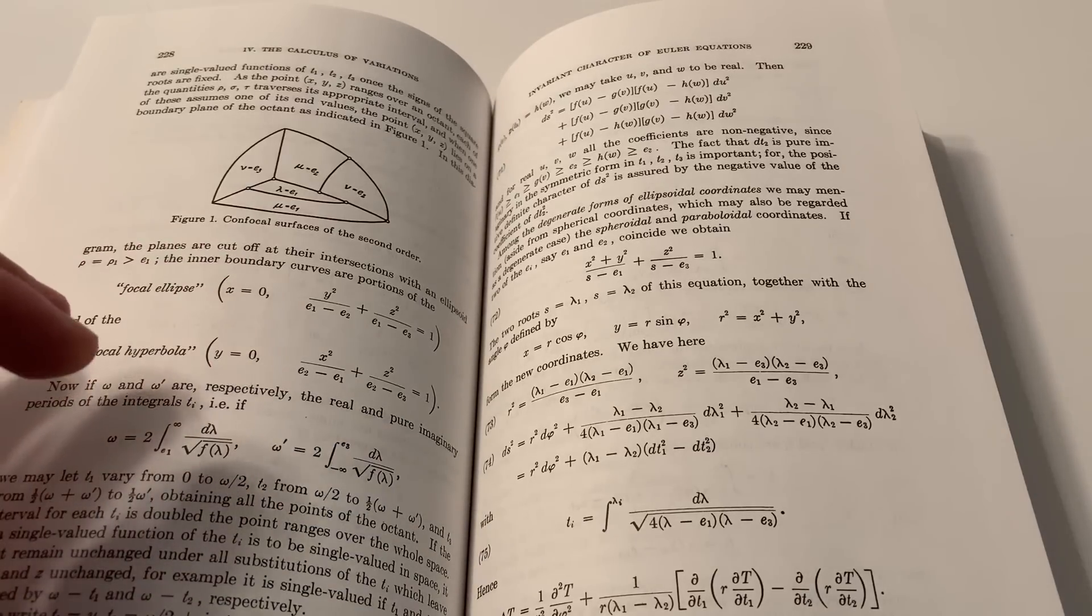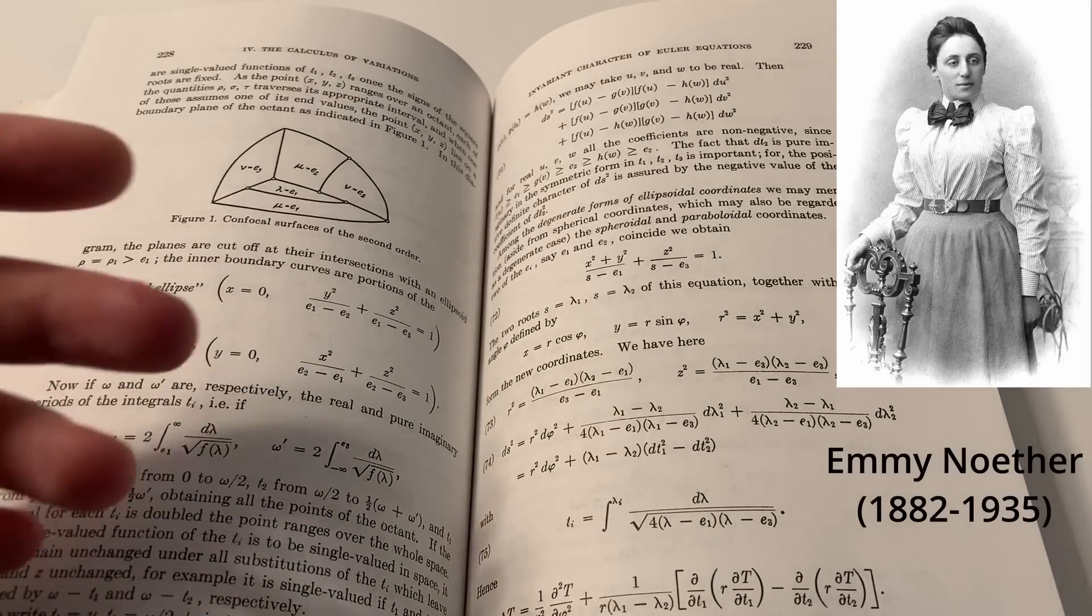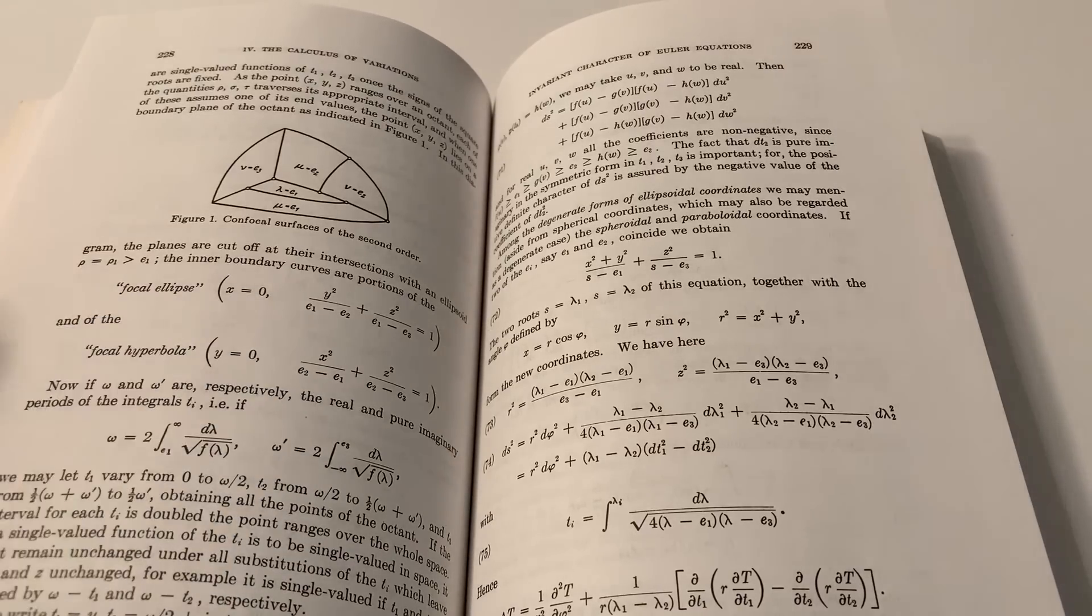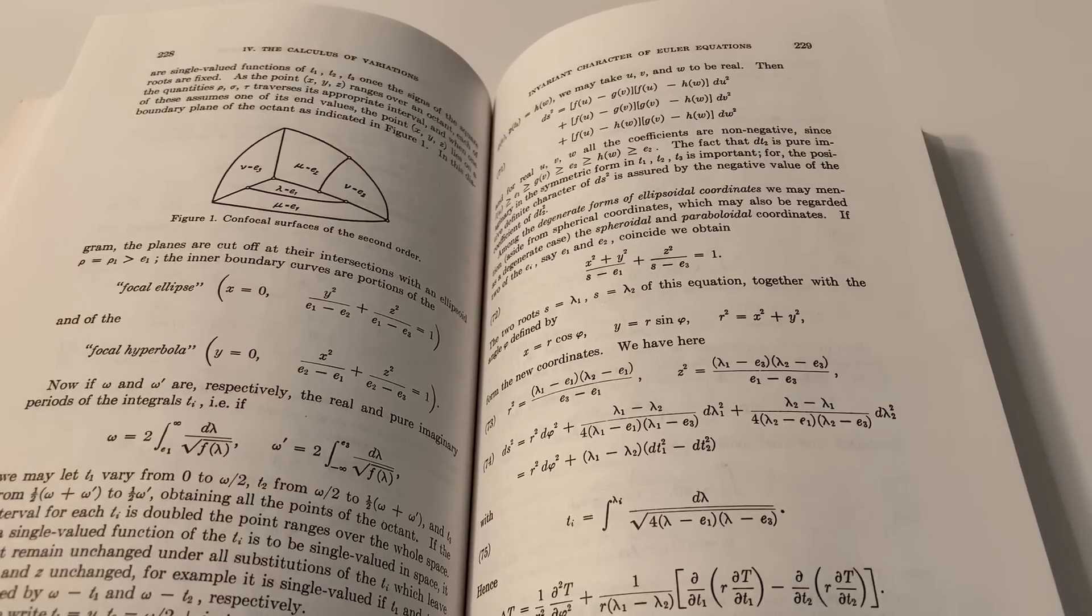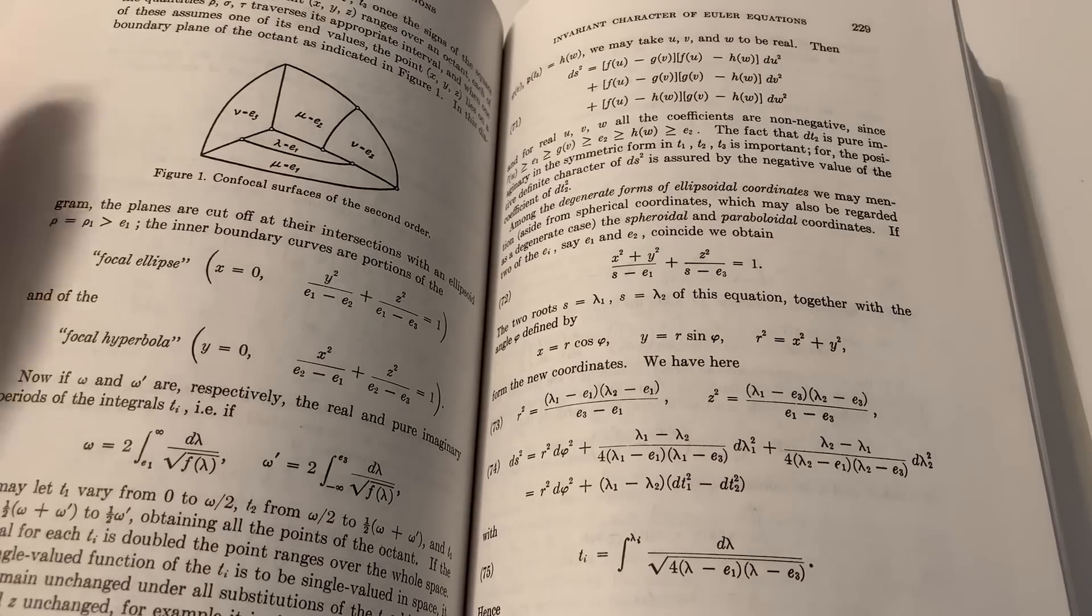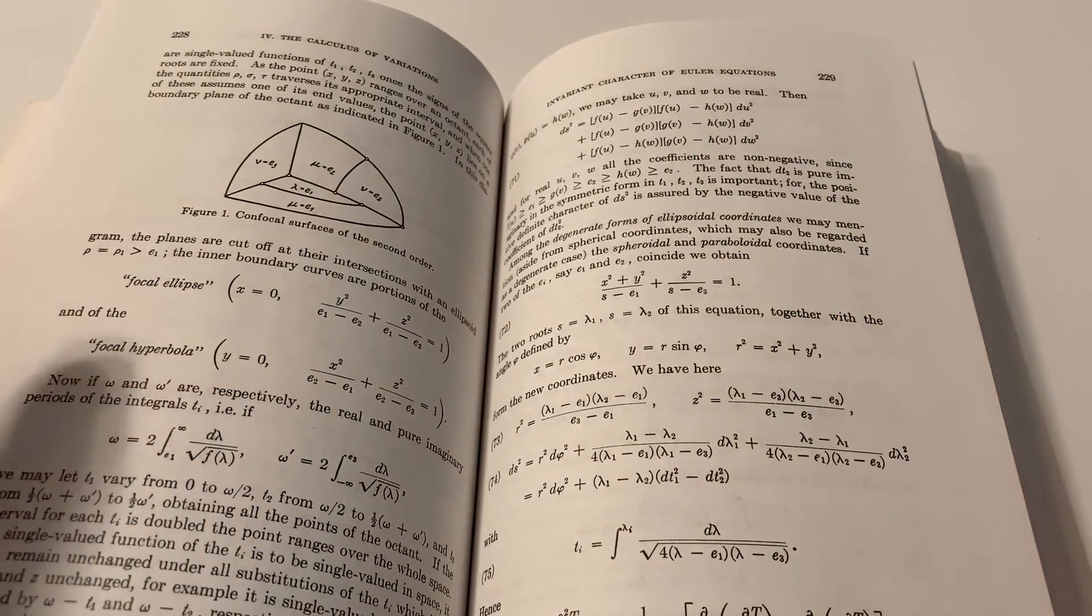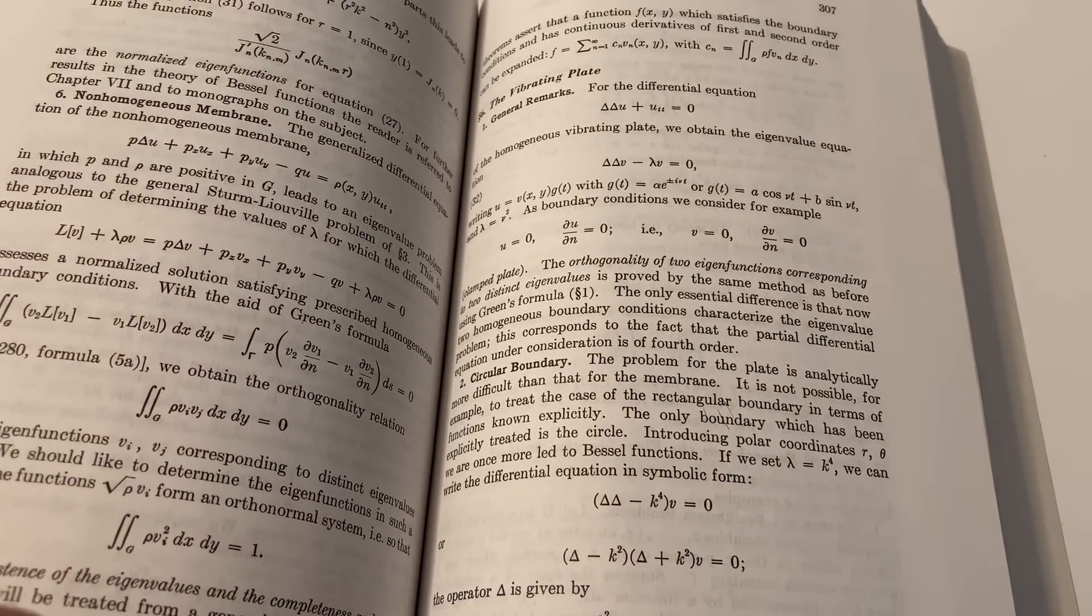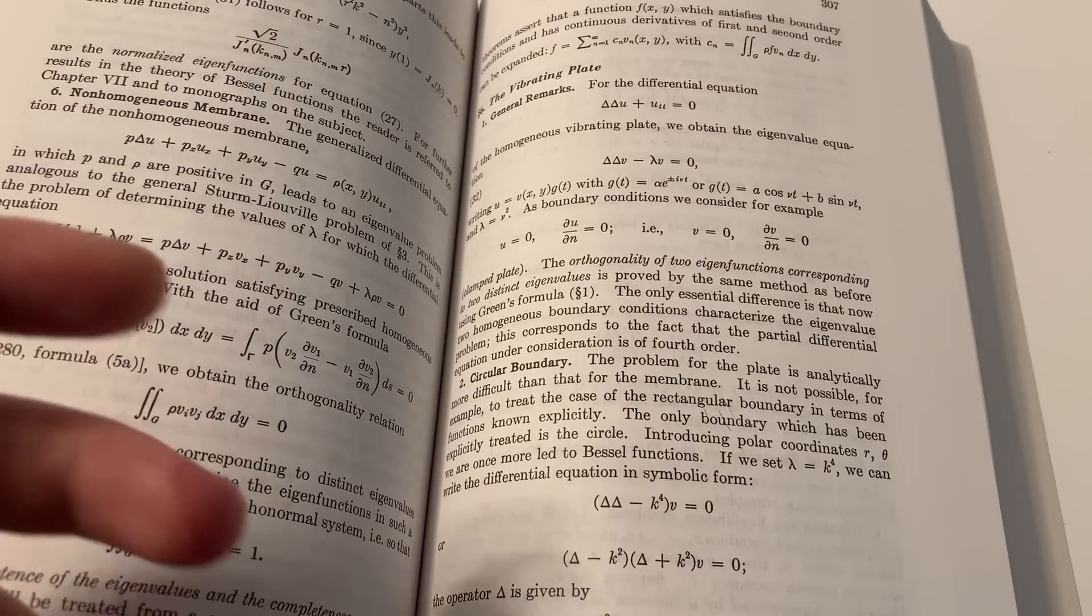Another famous German mathematician, for example, Emmy Noether, initially worked at Göttingen and was expelled by the Nazis. She later settled in the United States. She is considered the mother of modern abstract algebra, just an extremely influential individual. So Courant and Emmy Noether were among the luckier ones, which certainly cannot be said for everybody.